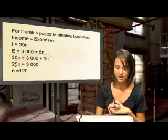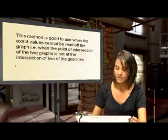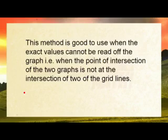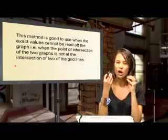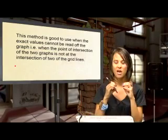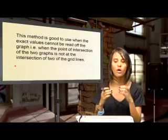This calculation method is good to use when exact values cannot be read off the graph — for example, when the point of intersection of the two graphs does not fall on the intersection of two grid lines. If the graph is too big, too small, or unclear, you have a calculation to work with: set income equal to expenses, solve the equation, and you get the value you need.